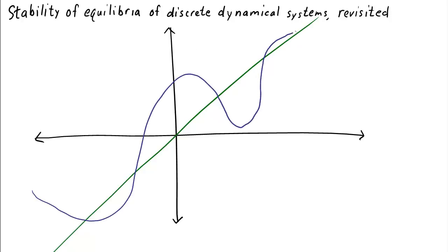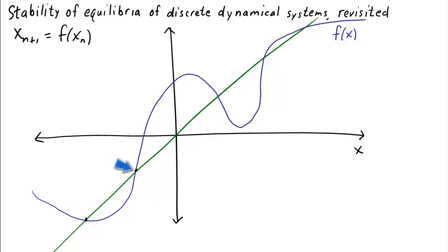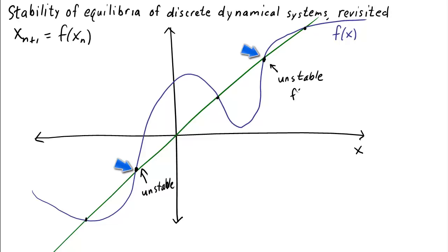Let's imagine I had a dynamical system xn+1 equals f(xn), where the graph of f is a blue curve. I can immediately find the equilibria, which are the points where the graph intersects the diagonal, drawn as a green line. I can quickly see that two of these equilibria are unstable because f'(e) must be greater than 1 there, given that the slope of the function is greater than the slope of the diagonal at those points.